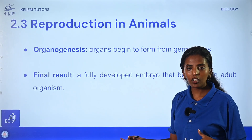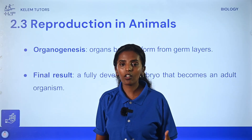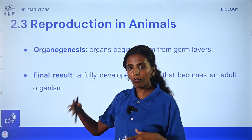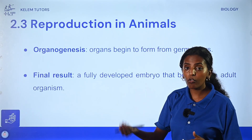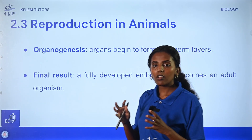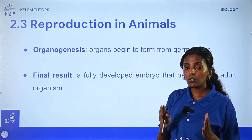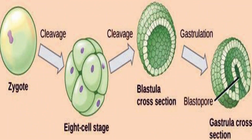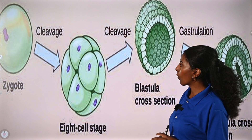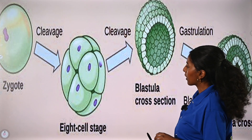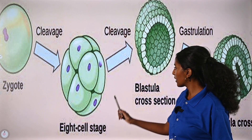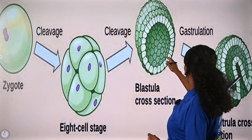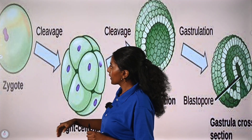The process of organogenesis follows gastrulation, where organs begin to form from those layers. The final result is a fully developed embryo. This is the overall sequence: cleavage produces many cells, forming the blastula, then gastrulation forms three germ layers, followed by organogenesis.